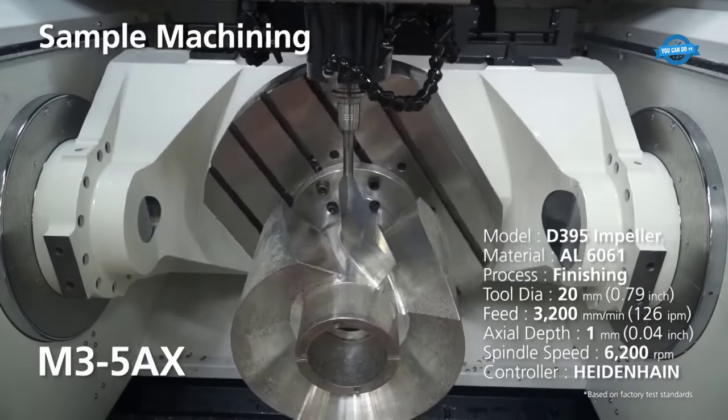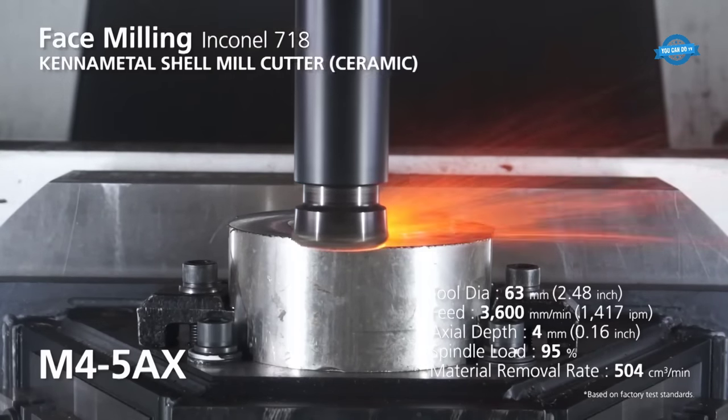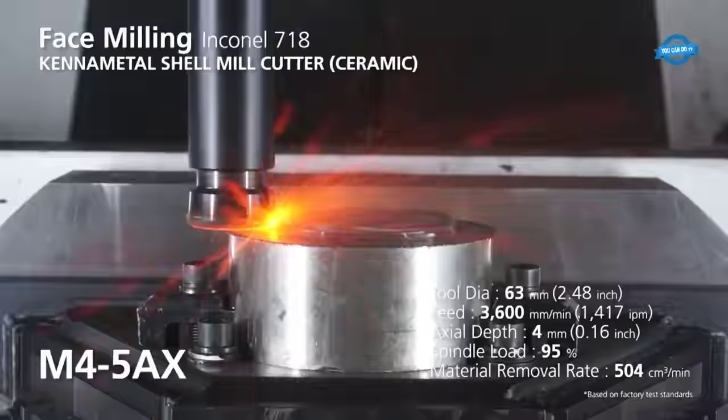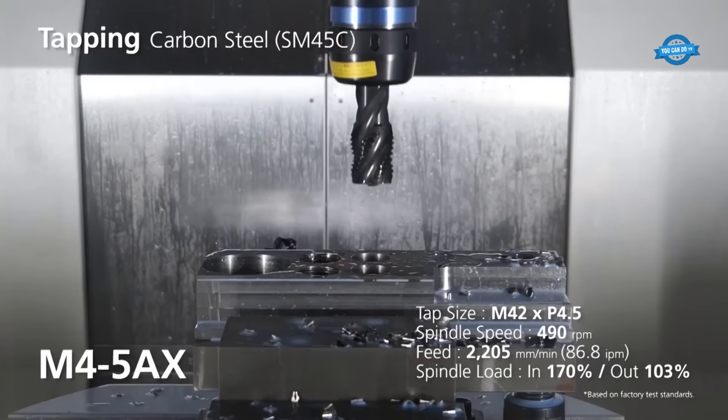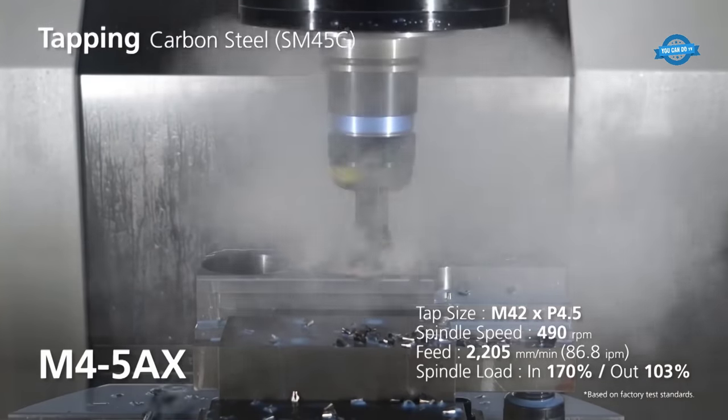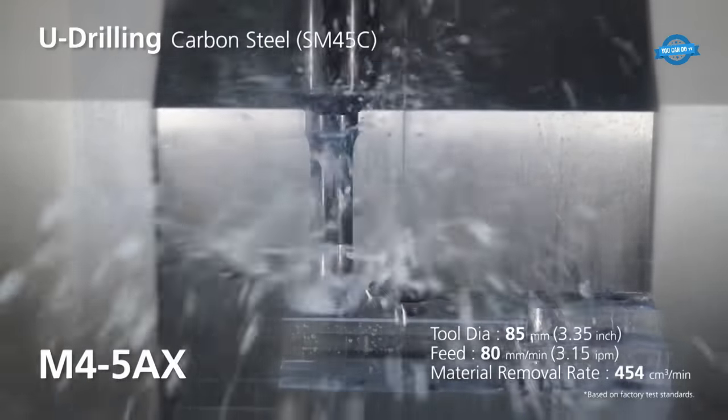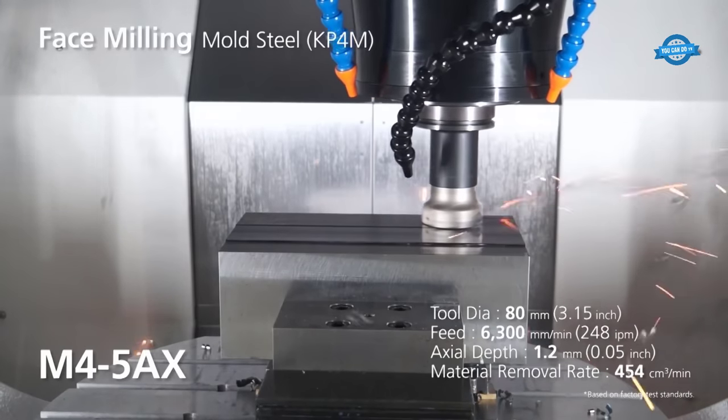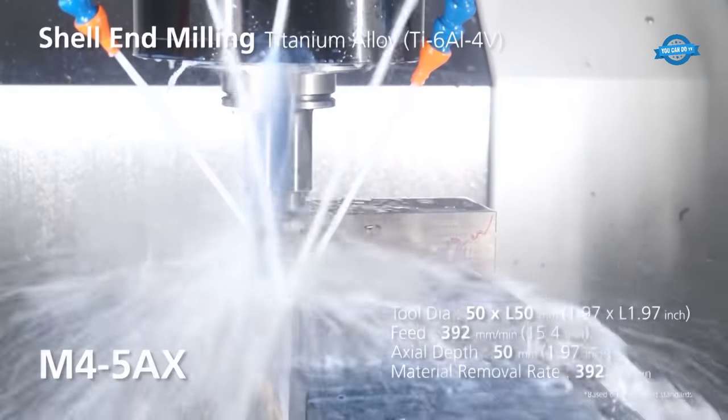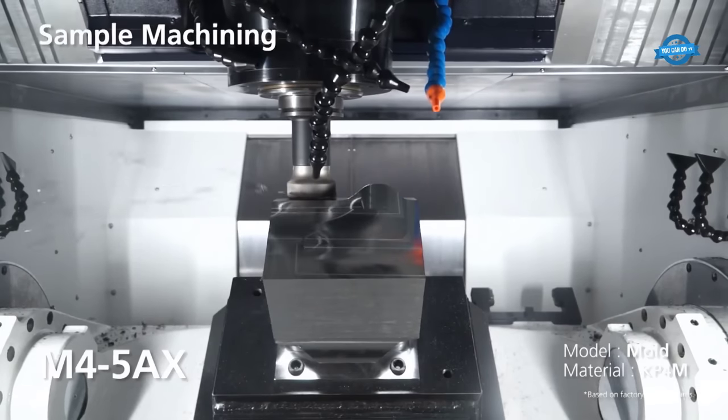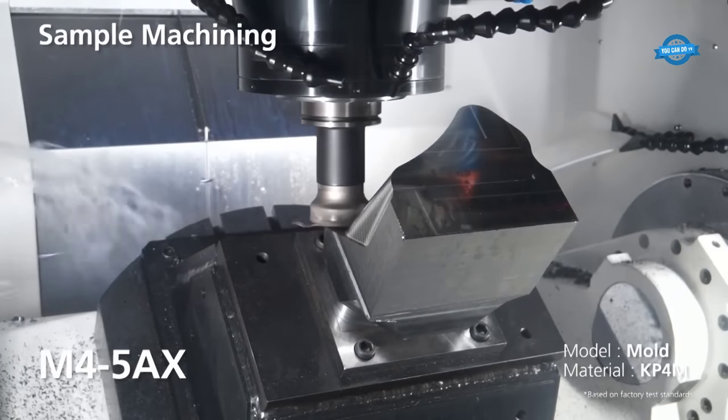These milling centers boast high rigidity and high-performance spindles, which are critical components for maintaining stability during high-speed machining. The combination of the robust spindle and Wachion's advanced five-axis software technology ensures precise and swift machining operations, minimizing errors and maximizing productivity. The five-axis capability eliminates the need for multiple setups and significantly reduces production time, enhancing the overall efficiency of the manufacturing process. This versatility, coupled with the high level of precision and speed, makes the M35AX and M45AX indispensable tools in industries requiring intricate and highly accurate parts, such as aerospace, automotive, medical, and mold-making industries.